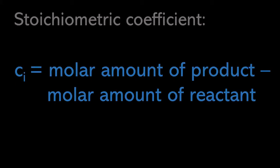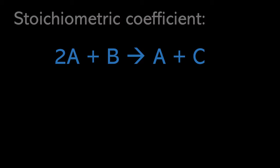The stoichiometric coefficient is the difference between the molar amount of species on the product side and the molar amount of species on the reactant side. So let's compute the stoichiometric coefficients for this quick example. For species A, on the product side we have a molar amount of 1 and on the reactant side we have a molar amount of 2. Therefore the stoichiometric coefficient is 1 minus 2, which is negative 1.